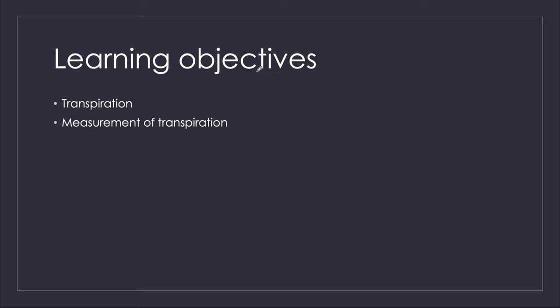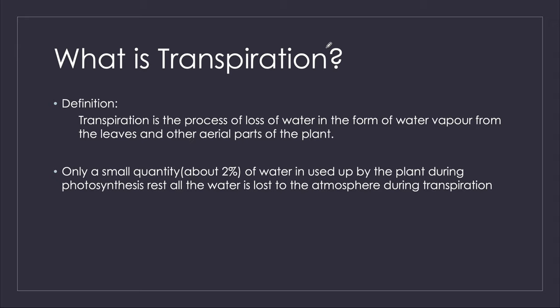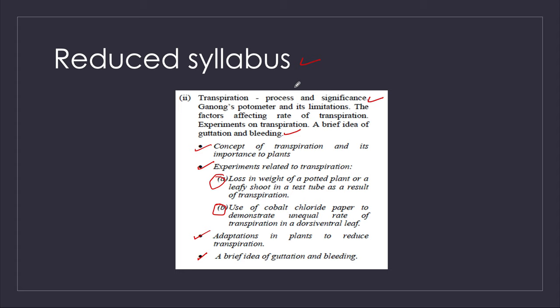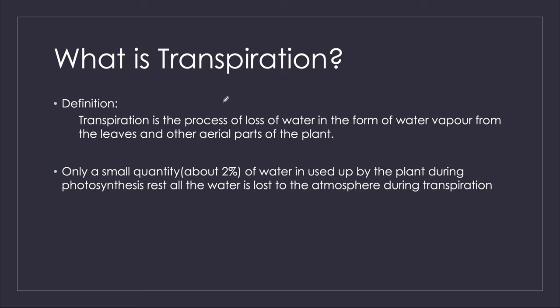In this session we're going to talk about transpiration and the measurement of transpiration. First, what is transpiration? Transpiration is basically the process of loss of water in the form of water vapor from the leaves and the other aerial parts of the plant.